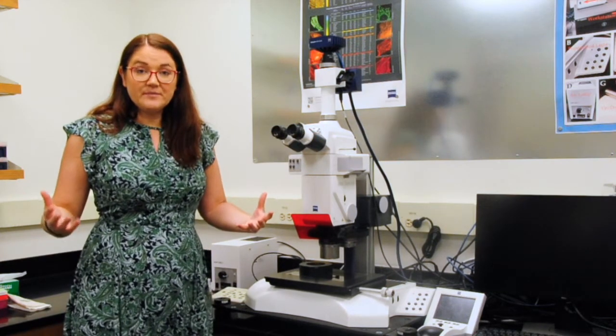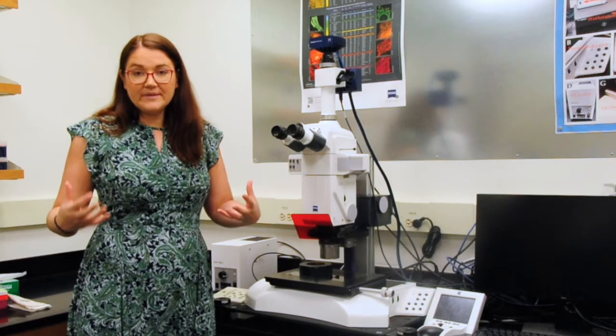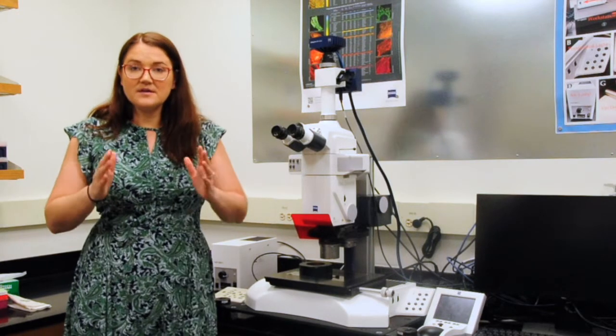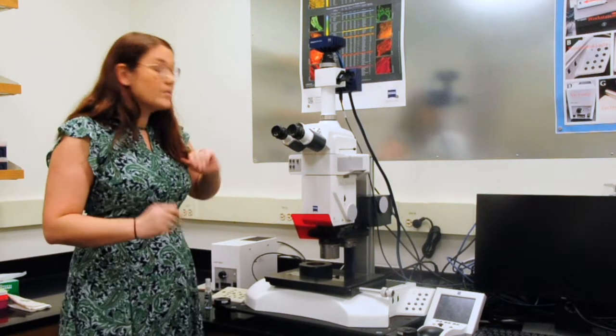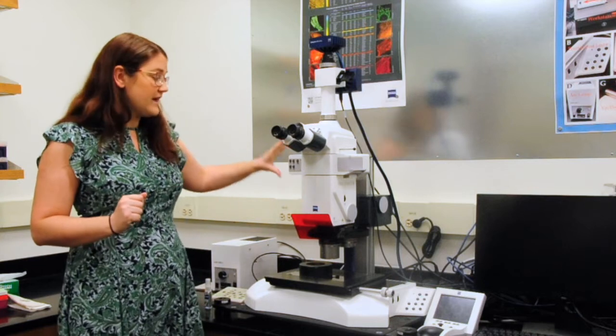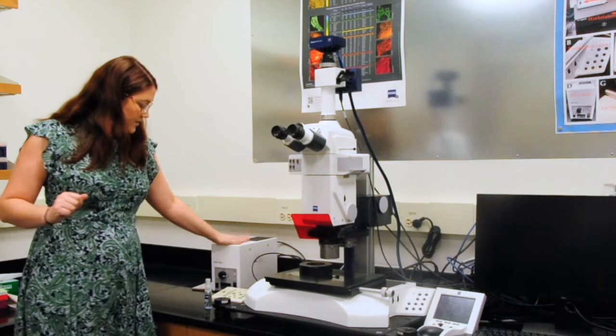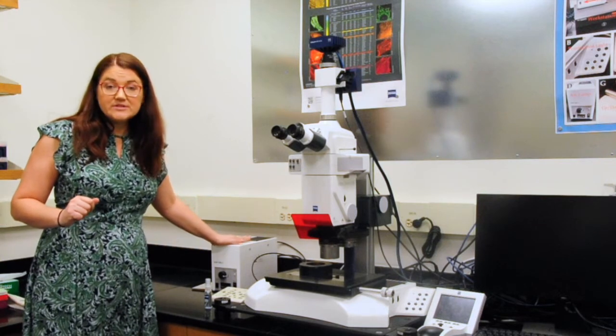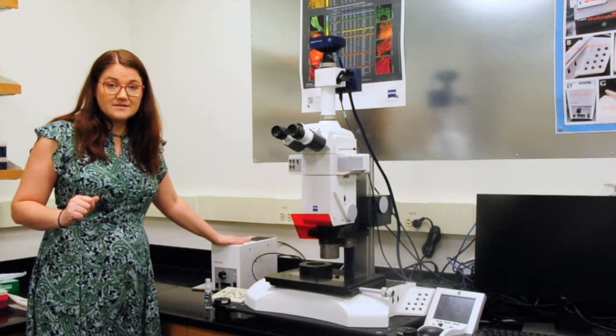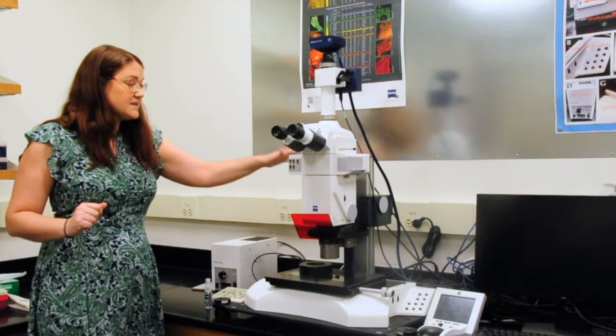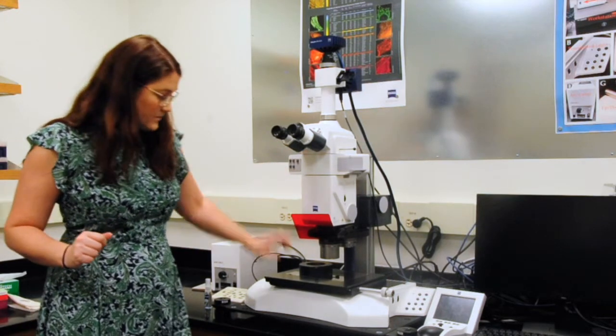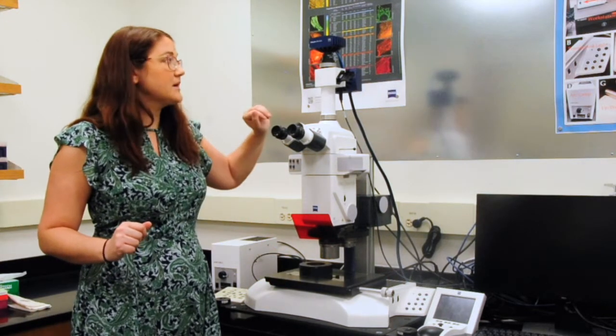Now, what is special about a common main objective microscope versus a Greenough microscope is that because of the formation of the light, we are actually able to put a fluorescent turret in here. And this is powered by our HXP 200. This is a metal halide light source, comes in through here, and we have our filter cubes, and we can bounce it off, come back up, and collect.